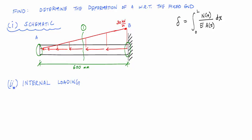What I want to do here is find N of x, or the internal normal force as a function of position along the length of the rod. I make this cut through the segment, and I'm going to choose the left side of the free body diagram because if I choose the right side, I'm going to need to calculate the reaction at B.